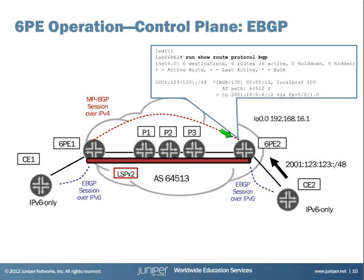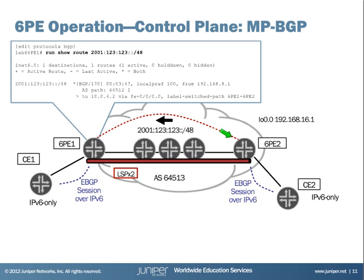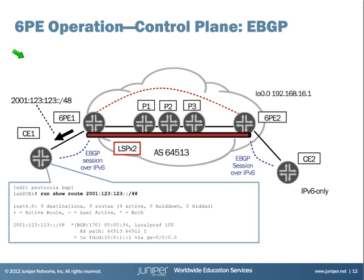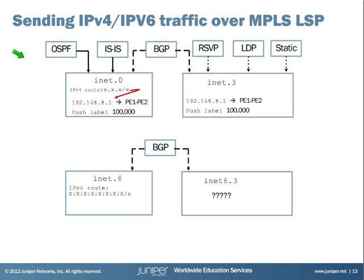6PE2 will advertise this IPv6 route to 6PE1 using the current existing iBGP IPv4 session. You just need to add another address family for IPv6 and send the label explicit-null — it's just adding one command. The 6PE1 receives the IPv6 route and installs it in its inet.6.0. Then 6PE1 will also advertise to the other PEs. But how can we send IPv6 traffic over an IPv4 MPLS cloud? First, let's remember the default behavior for Junos, which resolves the next hop for IPv4 BGP routes using the entry inside the inet.3 table.